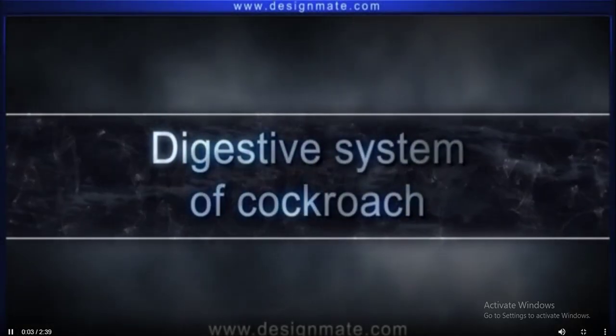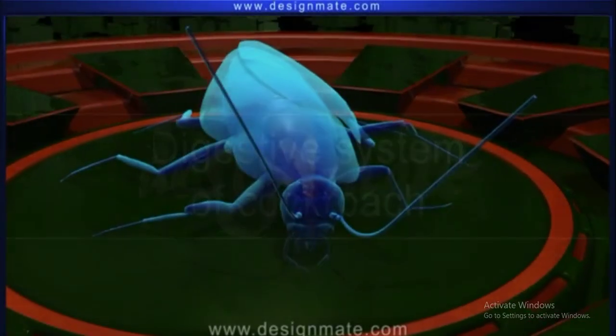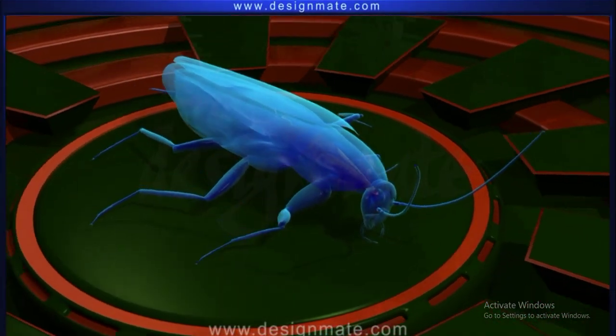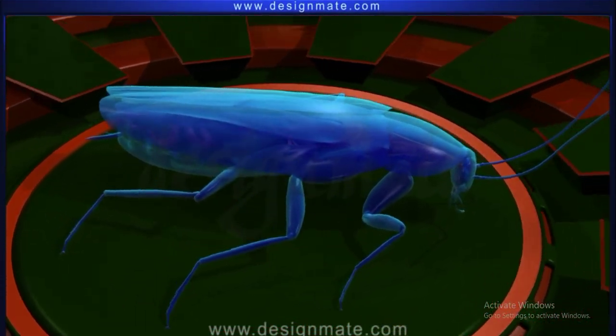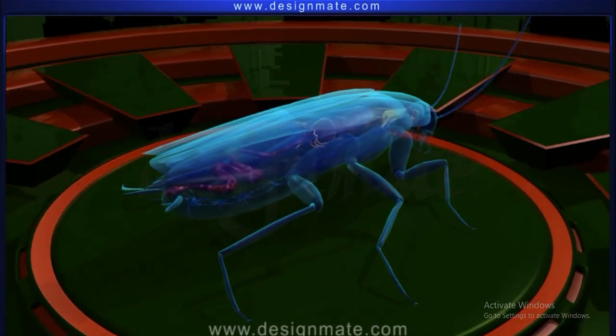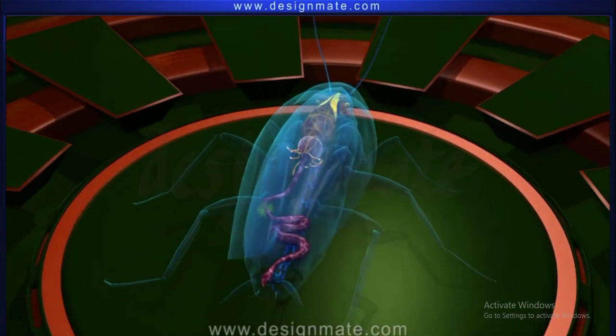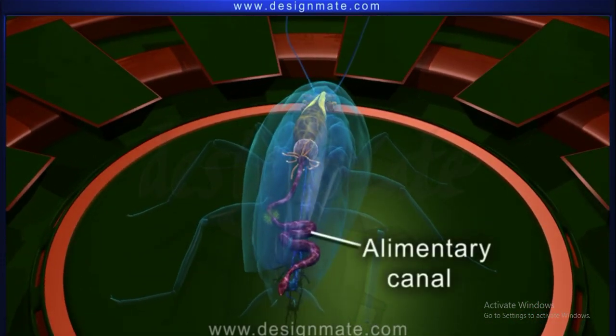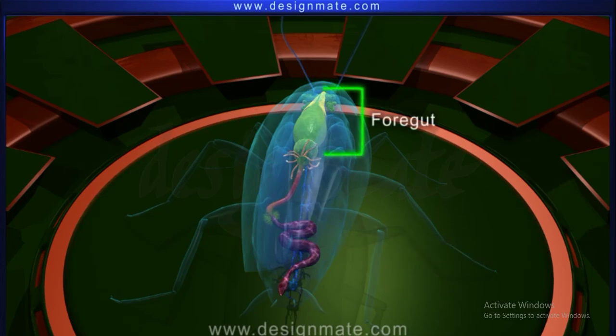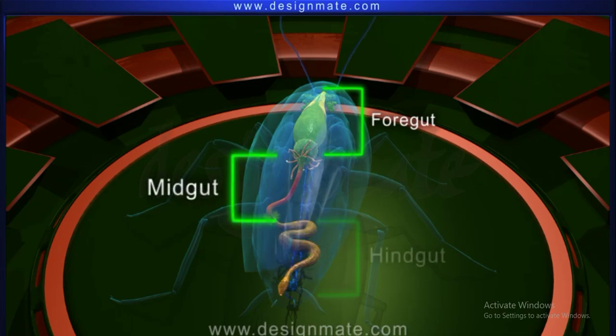Digestive System of Cockroach. The alimentary canal found in the body cavity is divided into foregut, midgut and hindgut.